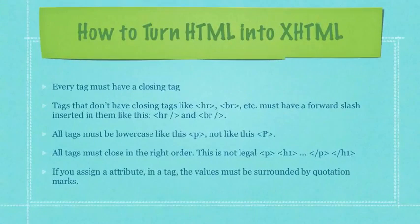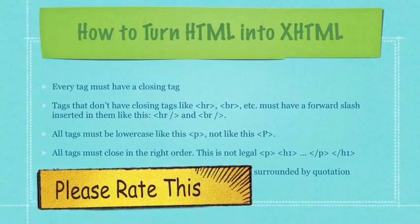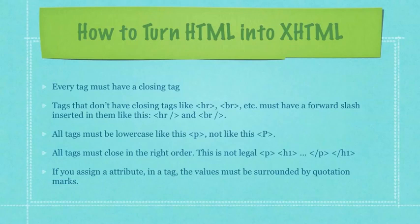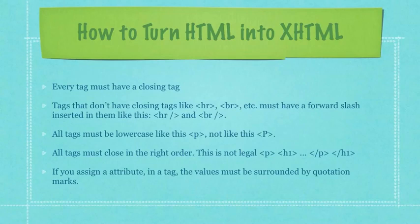So how do you turn HTML into XHTML? First, every tag must have a closing tag. Tags that don't have closing tags, like horizontal rule or break, must have a forward slash inserted in them like this. All tags must be lowercase, like you can see here in this paragraph tag — not like this.